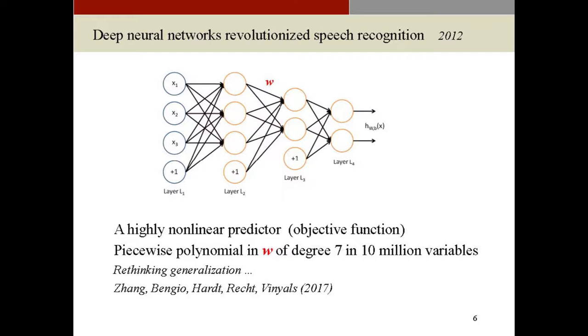Even if you just have a piecewise linear activation function, you will end up with a piecewise polynomial in the unknowns — the weights of the arcs — a piecewise polynomial of degree seven in, say, 10 million variables. That's just too much for people in approximation theory to describe: how many stationary points, how many global minima? There's a lot of interest in trying to look at this now, but it's a very complicated thing.